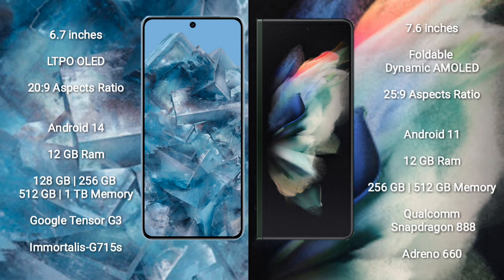Google Pixel 8 Pro comes with 12GB RAM and 128GB, 256GB, 512GB, or 1TB internal storage options. It is powered by the Google Tensor G3 processor with GPU G715S.